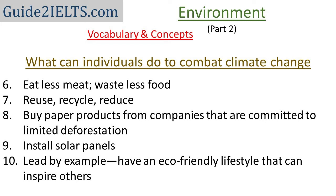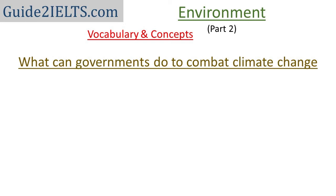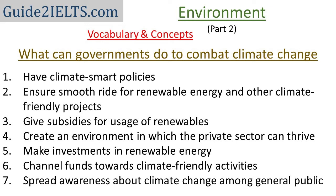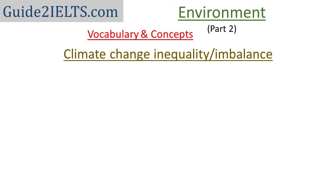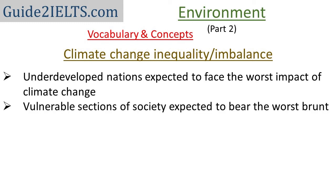And finally, lead by example — make sure you have a lifestyle which supports environment-friendly activities so that others can see you and get inspired to do the same. Now, a list of what governments can do to combat climate change: have climate-smart policies; ensure corruption and excessive red tape is not stifling investments in renewable energy; give subsidies for usage of renewables; create an environment where the private sector can invest in renewable energy; channel funds towards climate-friendly activities; and spread awareness among citizens. Notably, underdeveloped nations are expected to face the worst impact of climate change, and studies show the impact of disasters and failing agricultural systems will fall hardest on women.